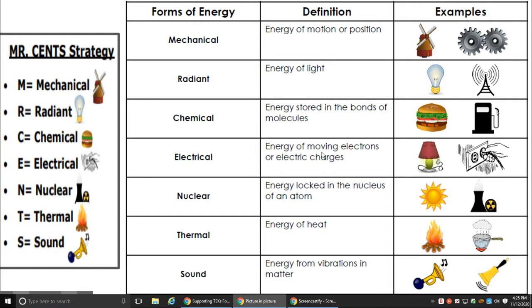Electrical: energy of moving electrons or electric charges. So anything you would plug into the wall would be electrical energy. Nuclear energy is energy locked in the nucleus of an atom. So think of a nuclear power plant. Thermal: energy of heat. So thermal energy is heat. Sound: energy from vibrations in matter.